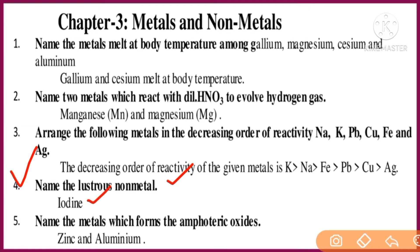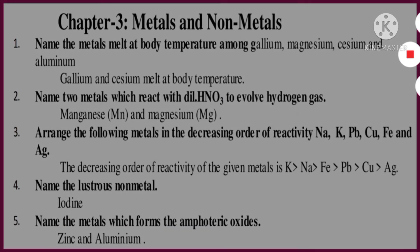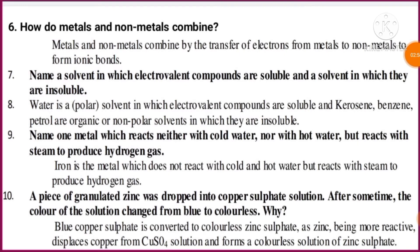Question number five: Name the metal which forms an amphoteric oxide. This is very important — zinc and aluminium oxides are called amphoteric oxides because they react with both acids and bases.